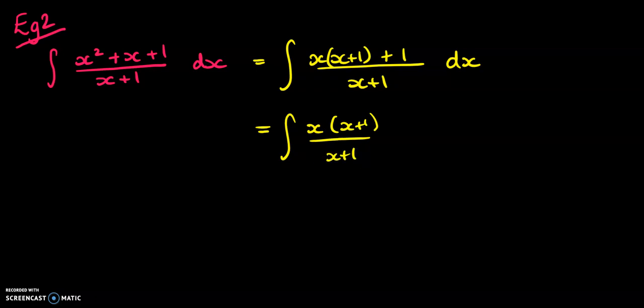Actually, we don't need the brackets on the bottom there. Plus 1 over x plus 1. So that x plus 1 cancels with that one. And we've got the integral of x plus 1 over x plus 1.